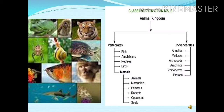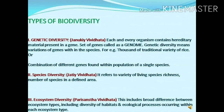The classification of animals with respect to biodiversity is also on the basis of whether the animal is vertebrate or invertebrate. Vertebrate means the animal having a skeleton in their body, whereas invertebrate means the animal is without a skeleton. For example, vertebrates are fishes, amphibians, reptiles, birds, and mammals. Whereas invertebrates are annelids, mollusks, arthropods, echinoderms, and protozoa. This is the classification of the biodiversity of animals.